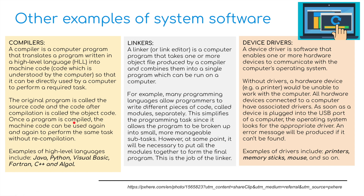For those who do coding, coding is done in something like Python or Visual Basic, which is known as a high-level language. In order for the computer to run and understand this, it would need converting into a low-level language or even machine code. A linker, or link editor, is a computer program that takes one or more object files produced by a compiler and combines them into a single executable program. For example, many programming languages allow programmers to write different pieces of code, and the linker allows all of these to be linked together.